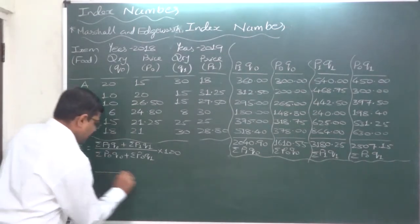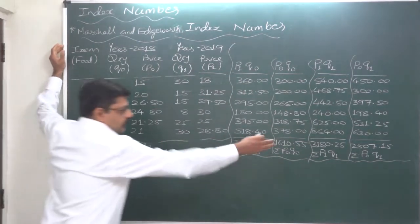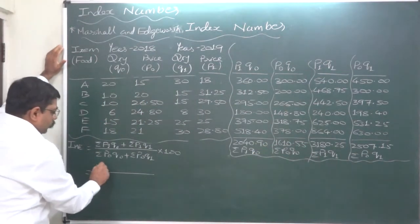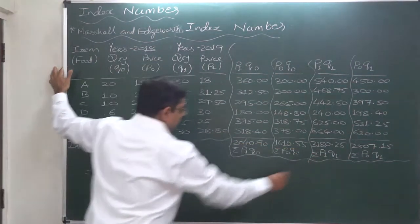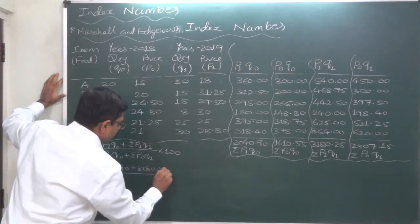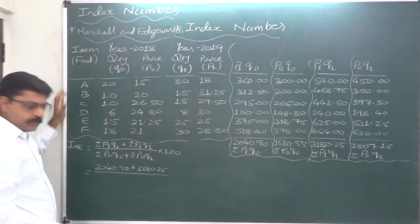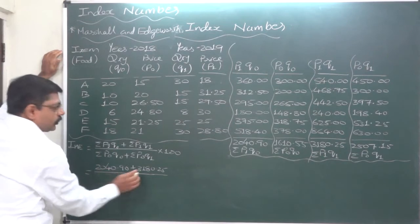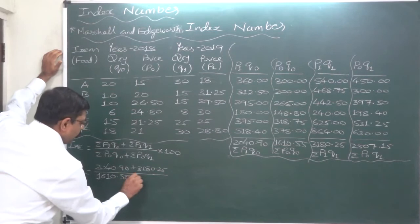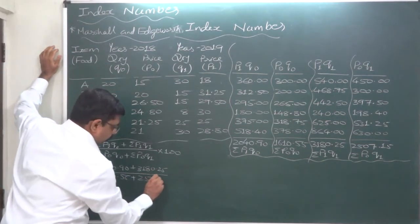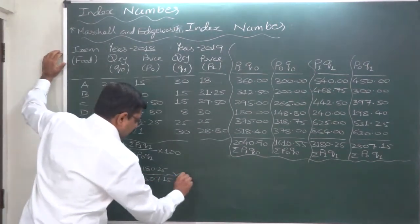Let's calculate. See, first and third column, second and fourth column according to this order of the columns. Sigma P1Q0 2040.90 plus Sigma P1Q1 3180.25. Current year prices always remain in the numerator. Sigma P0Q0 1610.55 plus 2507.15 that is Sigma P0Q1.